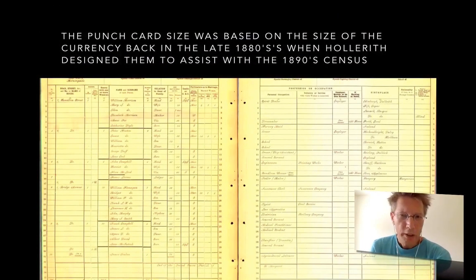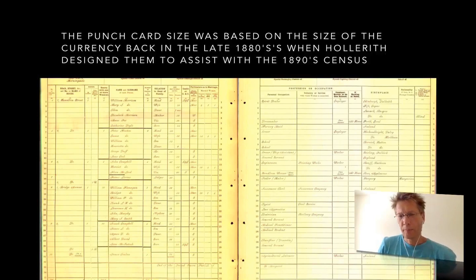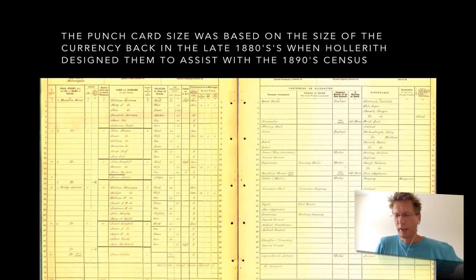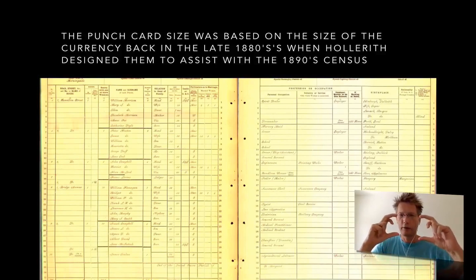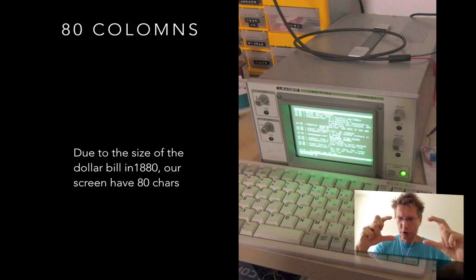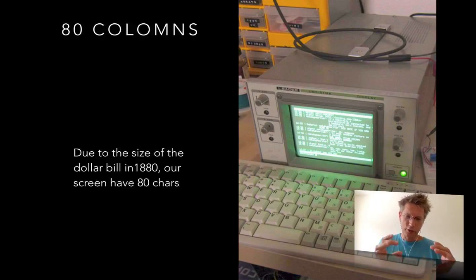It all goes back to 1880. There was a census and in America they counted the people and they wanted to transport the cards — where the notes were — via Pony Express. They had boxes for that, so they put the cards in the boxes and took them to a central place. They wanted to reuse boxes that were already there — boxes used to transport dollar bills — and the dollar bills back then were a different, larger size than the current size.